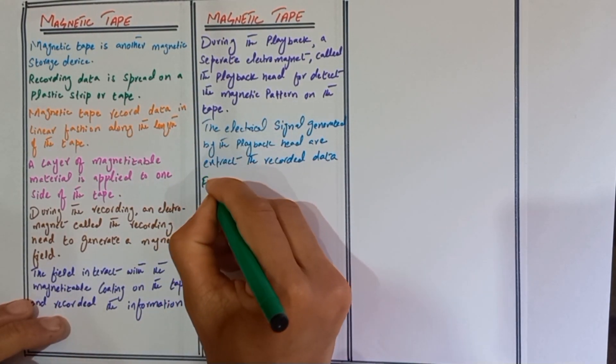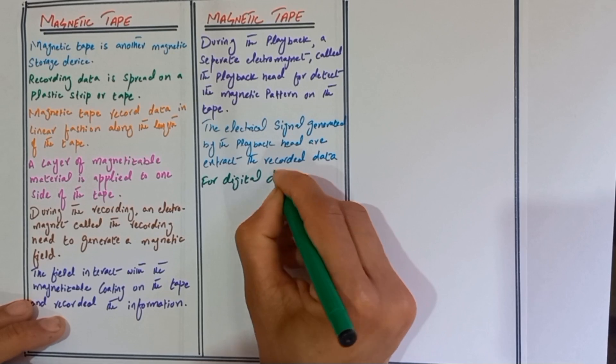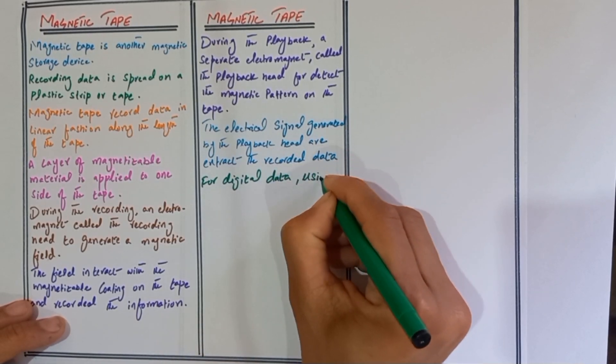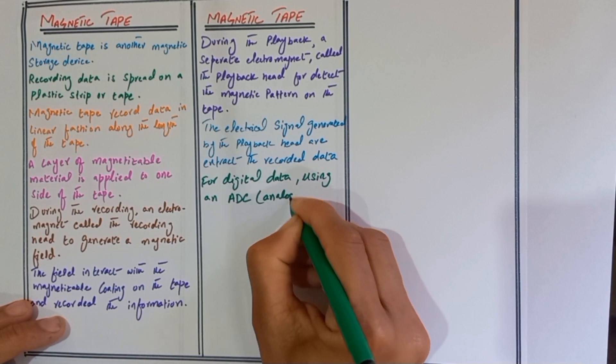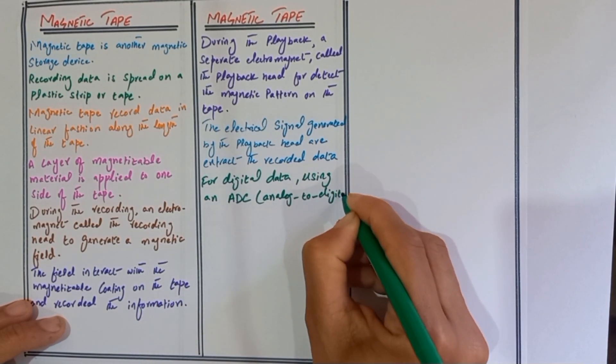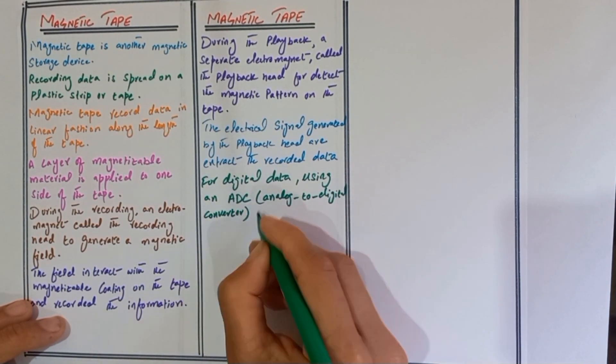For digital data, an ADC (analog to digital converter) device is used.